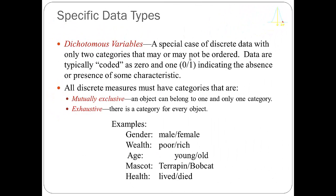There's a special case of discrete variables called a dichotomous variable, which is simply the case where you only have two categories. You clearly satisfy the mutually exclusive and exhaustive attributes for measurement. Typically in the computer, we store these values as zero and one, where zero implies the absence of a characteristic and one implies the presence. For example, people could be classified as poor and rich — either you have the characteristic of being poor, coded zero, or the characteristic of rich, coded one.